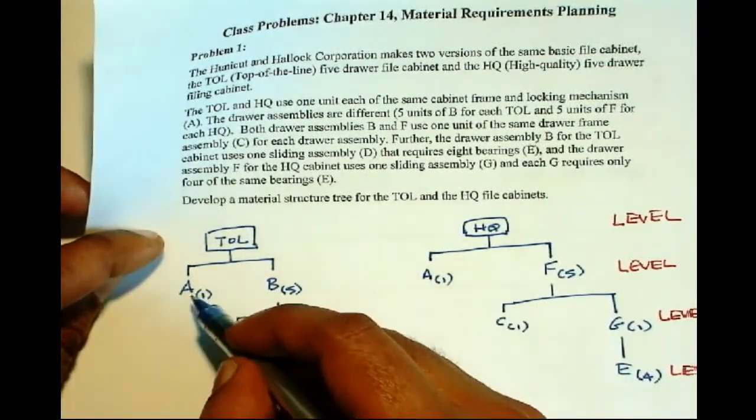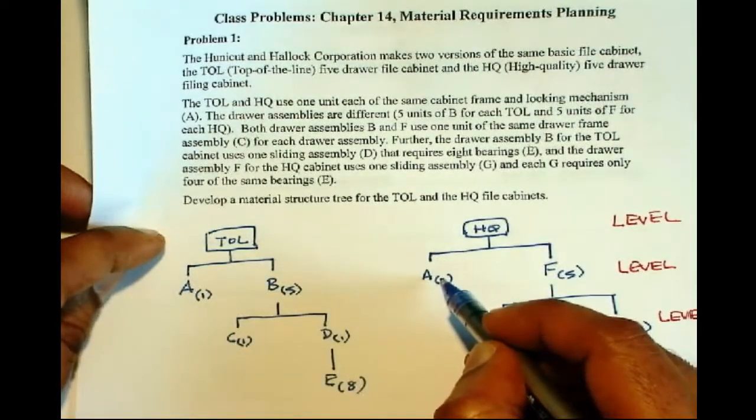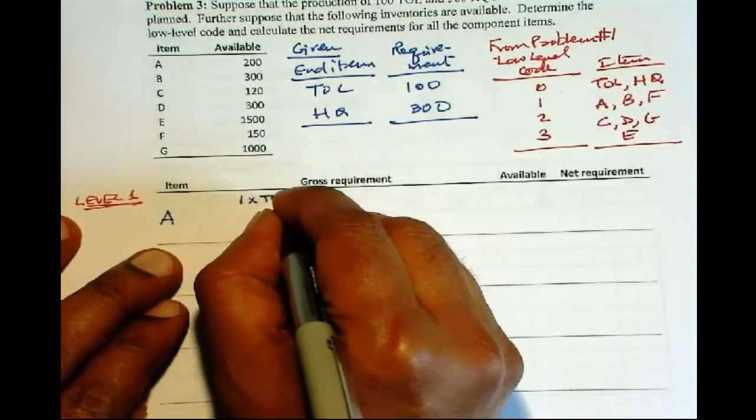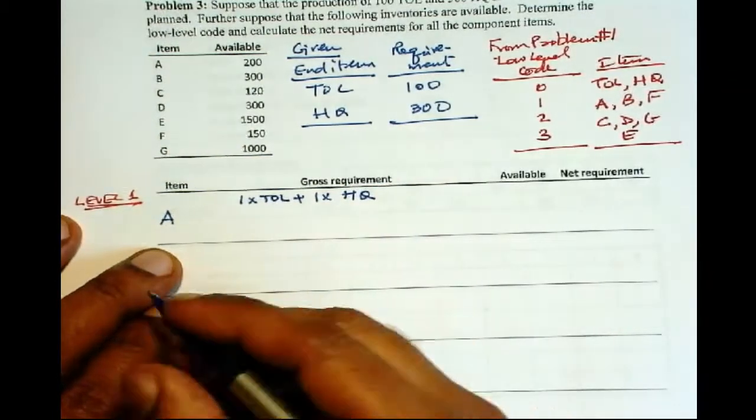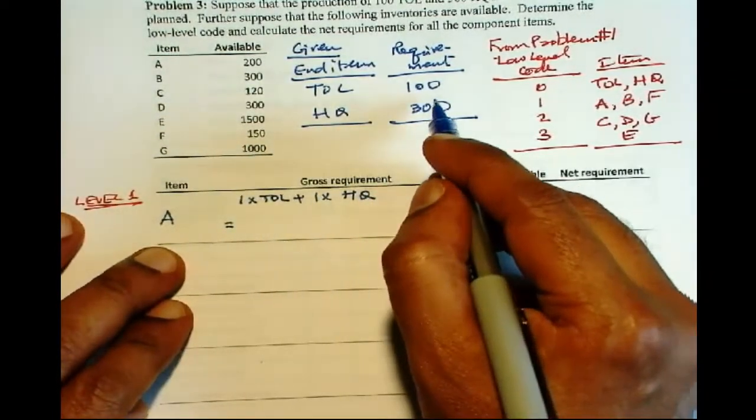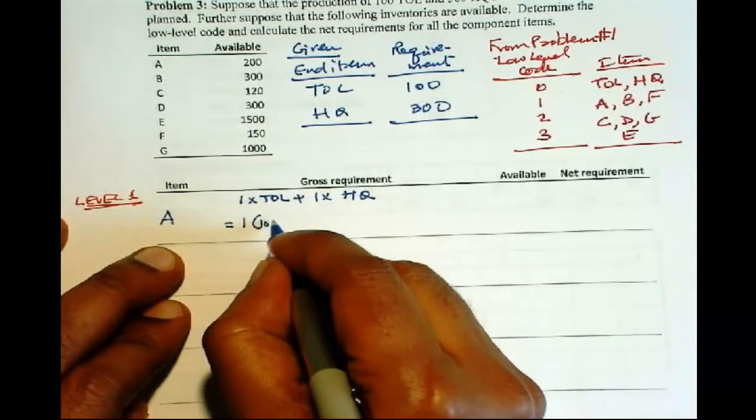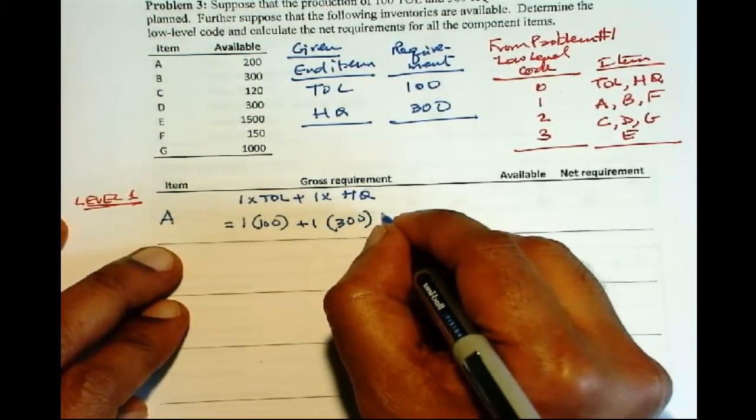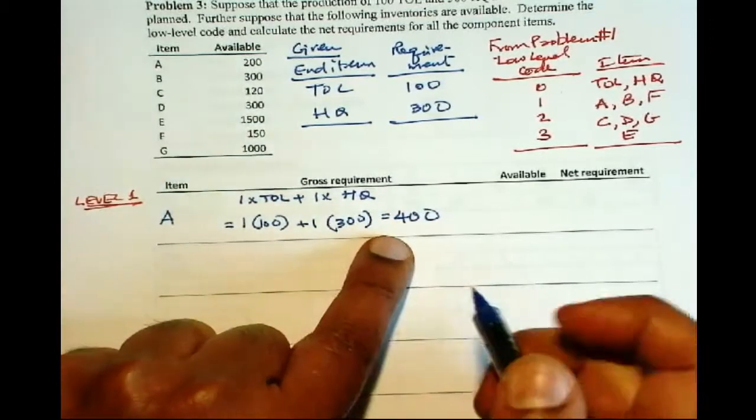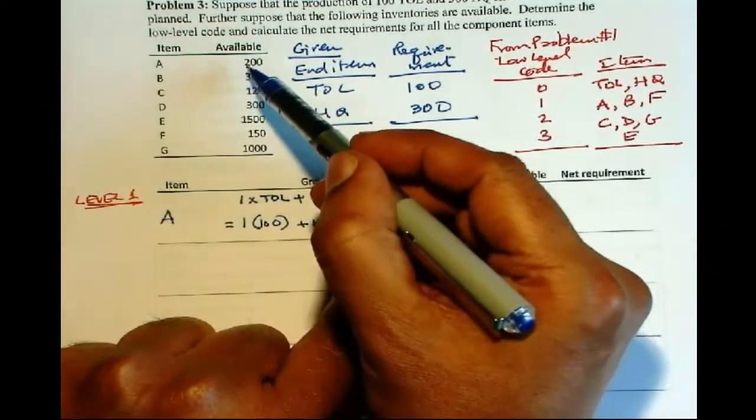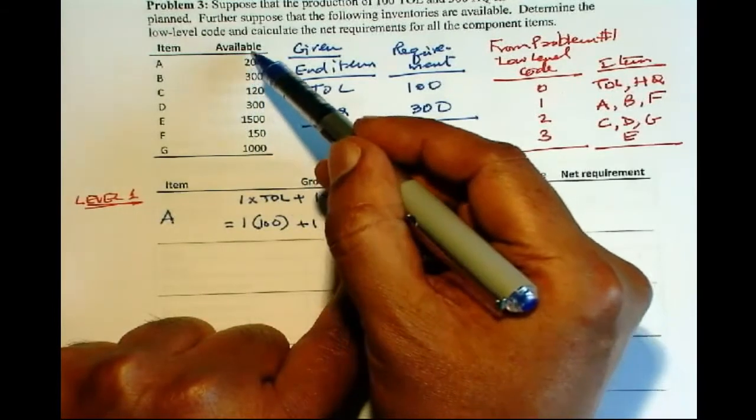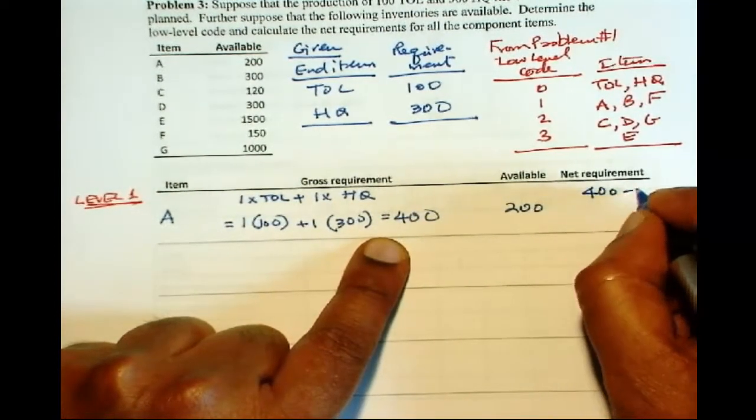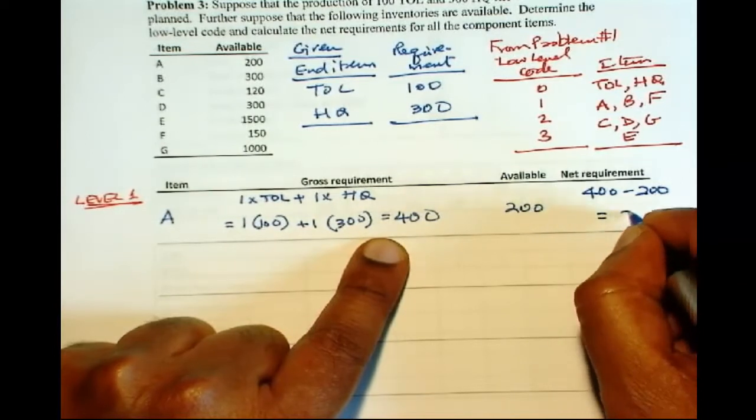You need one unit of A for each TOL and one unit of A for each HQ. So the gross requirement is 1 times TOL plus 1 times HQ. So we have 1 times 100 and then 1 times 300, and that is equal to 400. So that is the gross requirement for A. Now we are given the stock available. So we have 200 units available. So net requirement is 400 minus 200 equal to 200.